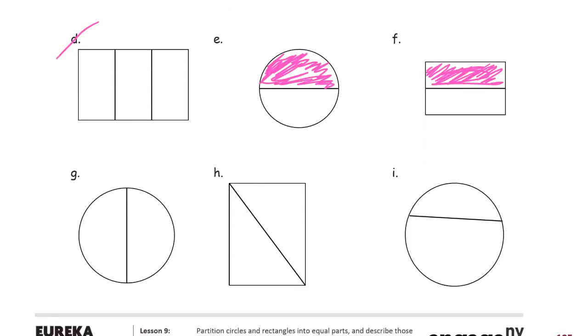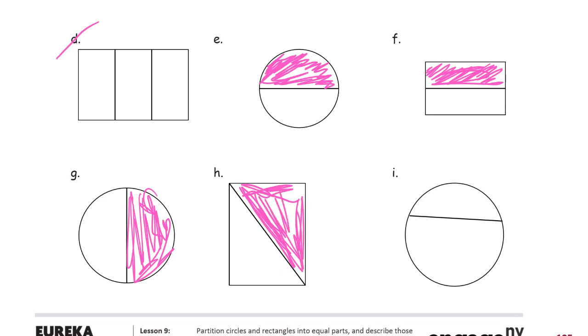And this circle for G looks like it's split right in half. And for H, these are two equal triangles, so I'm going to shade one of those.